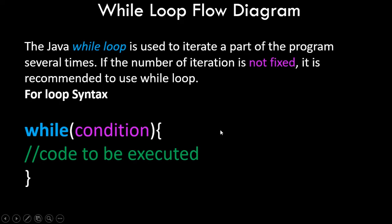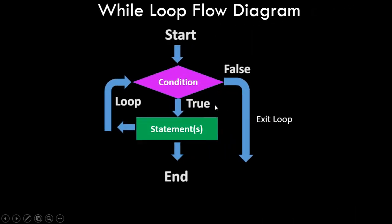Let's see the flow diagram of the while loop, which is simpler than the for loop's. You start, reach the condition, and as long as the condition is true the statements will be executed. Once the condition becomes false, the loop exits. After each statement execution, the condition is checked again — if false, it exits immediately; if true, it continues executing.